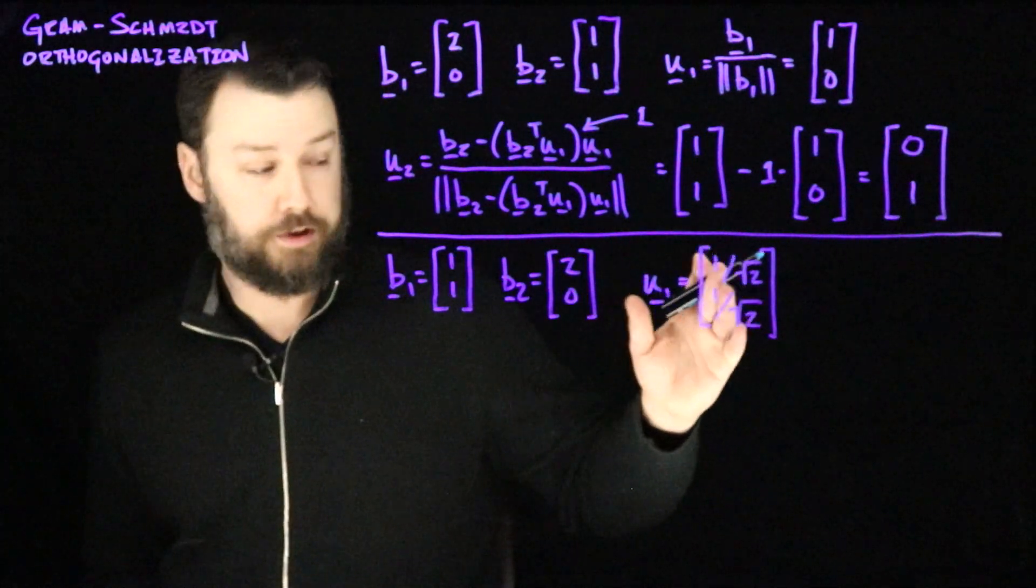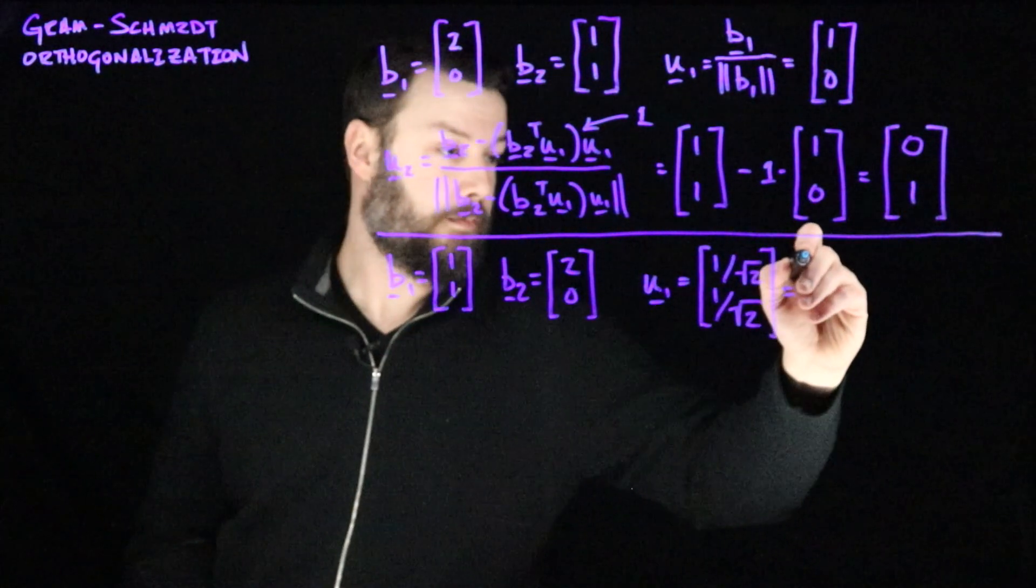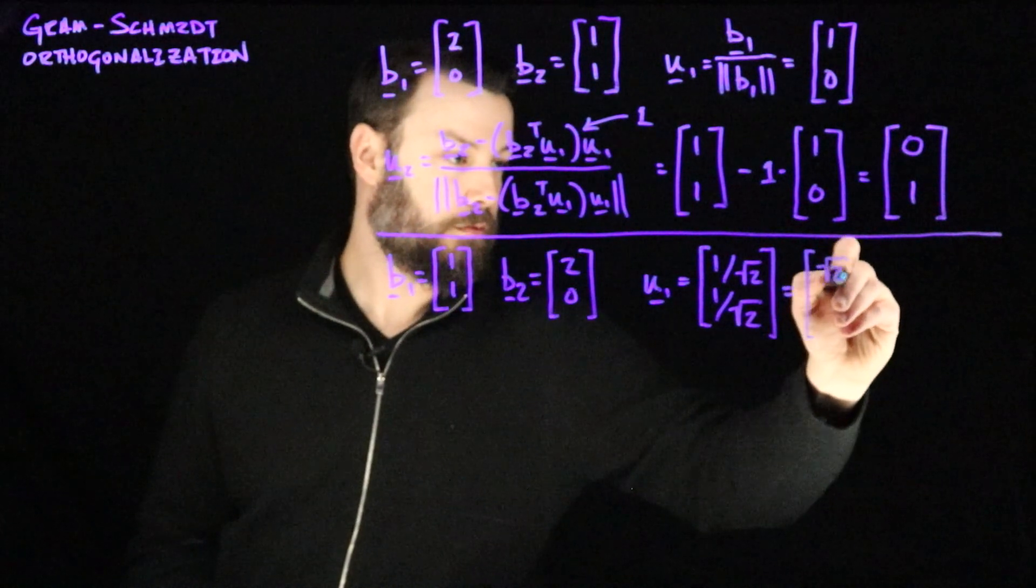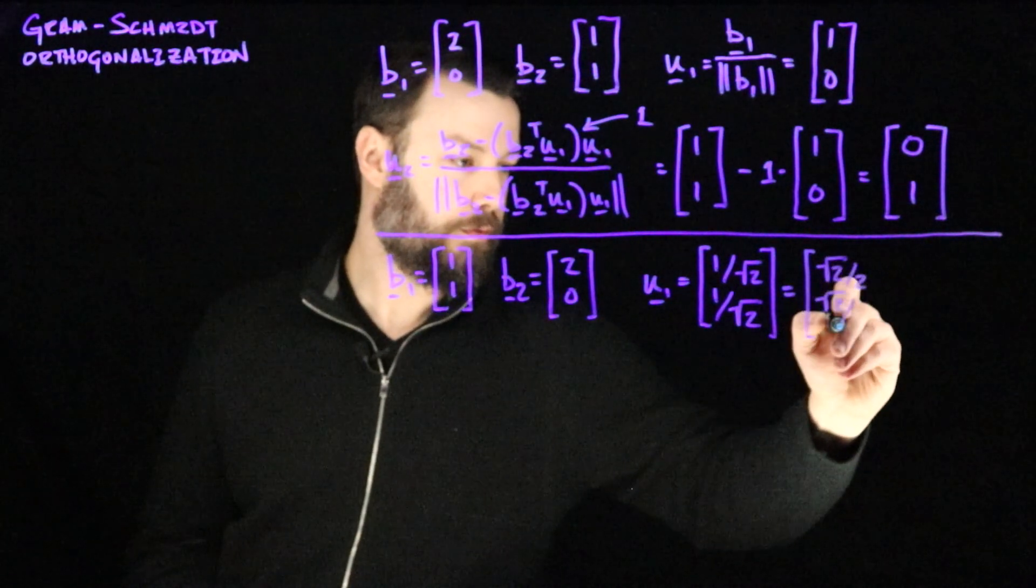Or, of course, we could multiply this through by square root of 2 over square root of 2 and get the radical into the numerator instead of the denominator. And then we get root 2 over 2 and root 2 over 2.